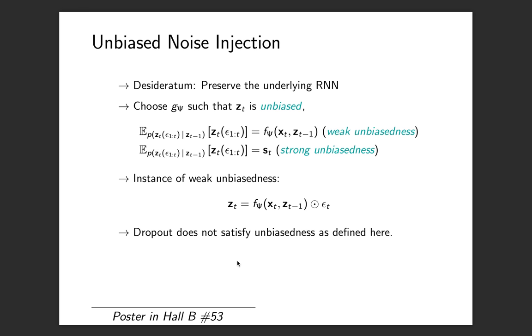The method we propose, NOISIN, relies on the notion of unbiased noise injection. We define two flavors of unbiasedness: strong unbiasedness and weak unbiasedness. Strong unbiasedness is defined as having the conditional expectation of the hidden state given the previous hidden state to be exactly the hidden state of the underlying RNN you're regularizing. Weak unbiasedness says that the conditional expectation of the hidden state given the previous hidden state is the transition function of the underlying RNN evaluated at the previous hidden state. These two flavors of unbiasedness, the whole unbiasedness criterion, ensures that the underlying RNN is preserved. The reason why we want that is we want to regularize an RNN while keeping its properties intact.